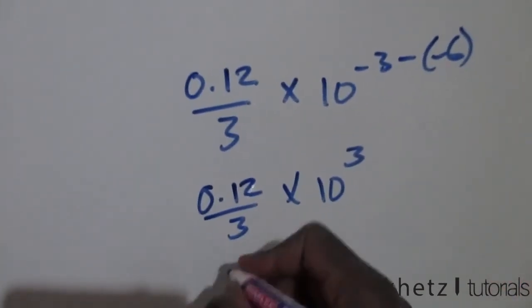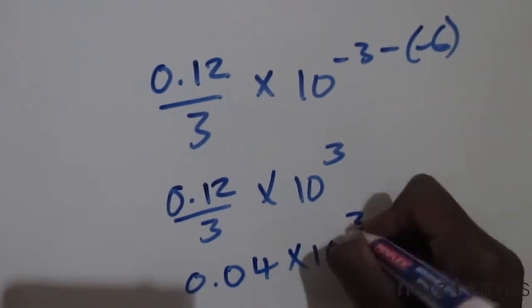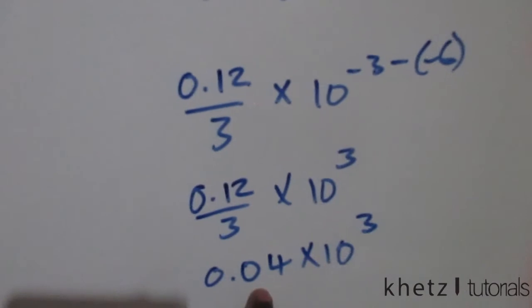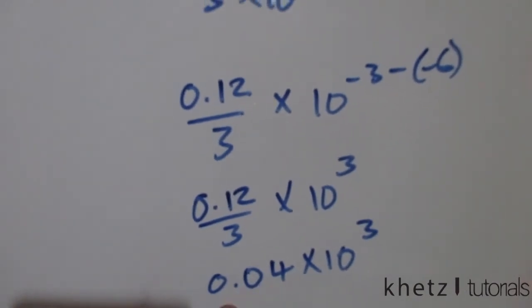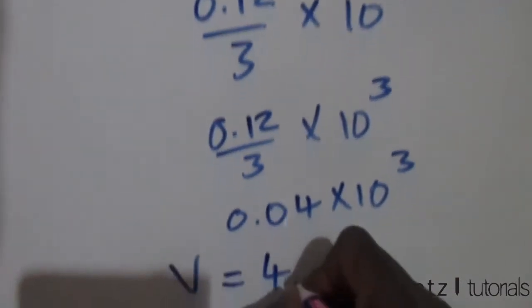We have 0.04 multiplied by 10 to the 3. Moving the decimal three places - one, two, three - we have a value of 40 volts.